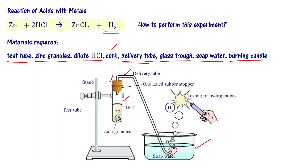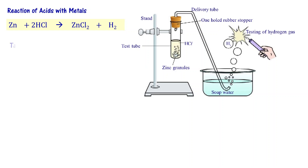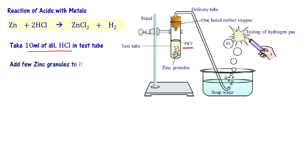Once the fitting is done, we take 10 ml of dilute hydrochloric acid in the test tube, then add a few zinc granules and close the cork. Once hydrochloric acid and zinc come into contact, the reaction starts. ZnCl₂ forms and dissolves in the dilute HCl around it, and hydrogen gas comes out through the delivery tube and enters the soap water.